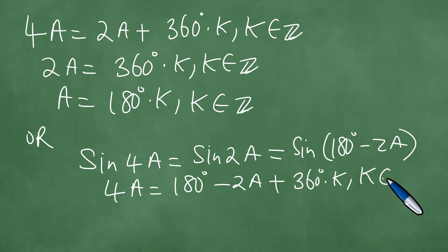That is what we are able to achieve, which means 6A is the same as 180 degrees plus 360 degrees times k, where k is an element of Z.